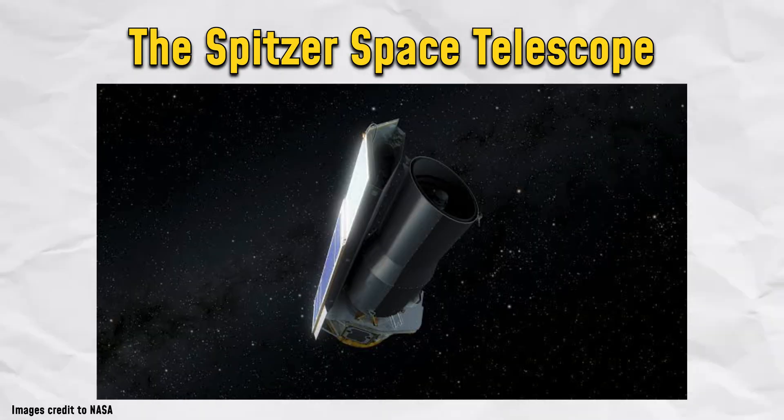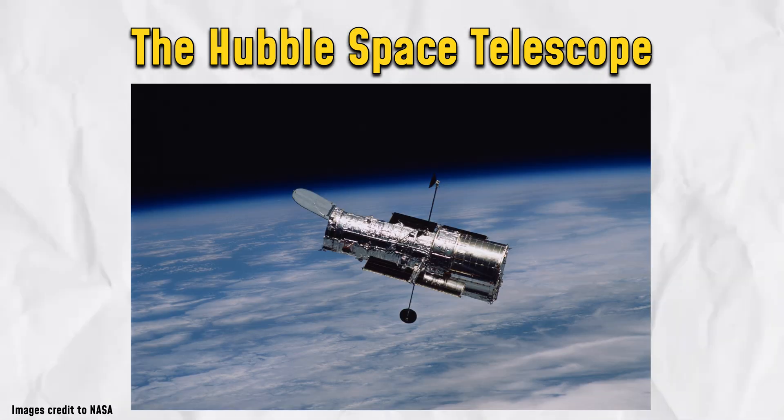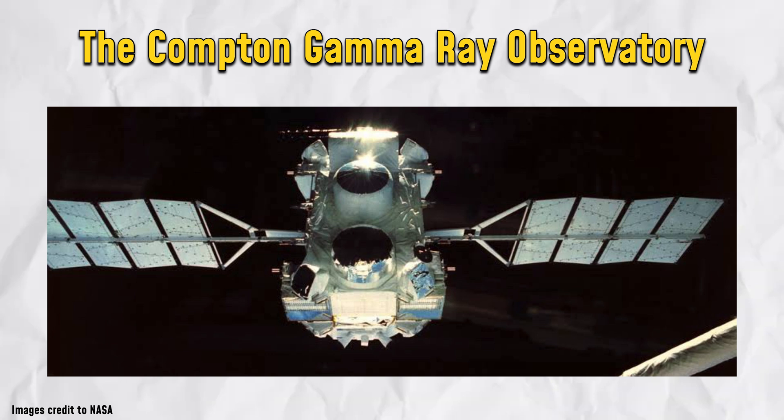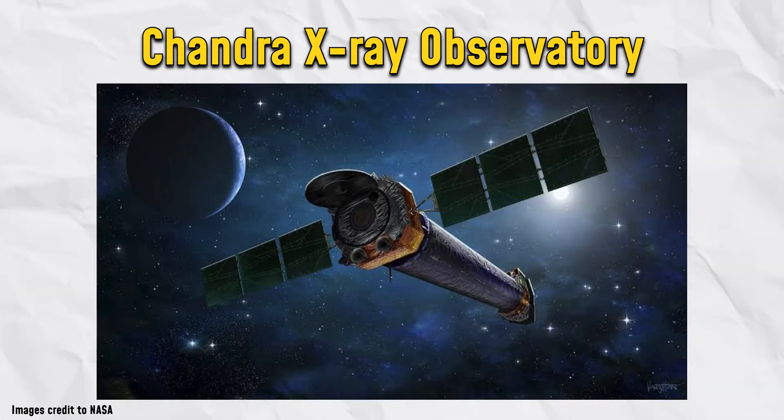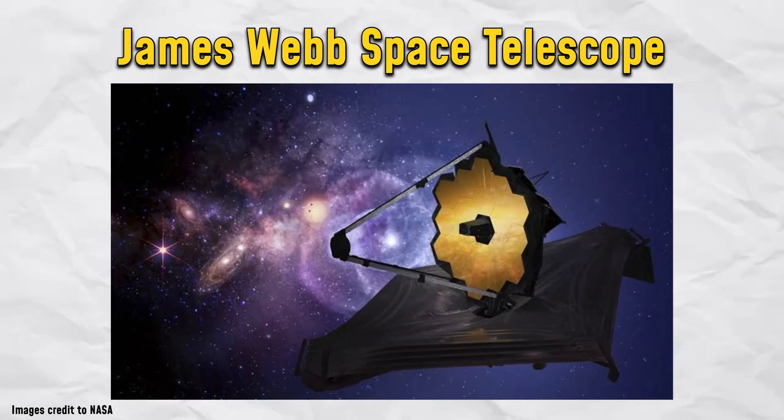The Spitzer Space Telescope, the Hubble Space Telescope, the Compton Gamma Ray Observatory, the Chandra X-ray Observatory, and the James Webb Space Telescope are used to observe celestial events.